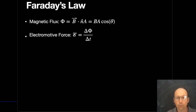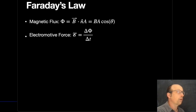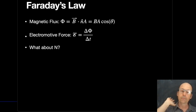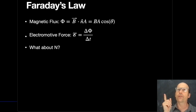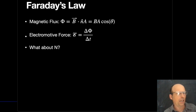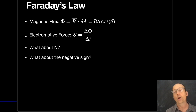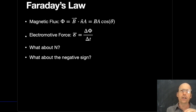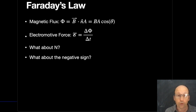Faraday's Law says that the electromotive force depends on the rate of change of the magnetic flux. A constant flux means no electromotive force. You may see this written as EMF = N·ΔΦ/Δt, where N is just the number of loops. You might also see a negative sign, but we can't really define directions of EMF and flux in this version, so don't worry about it.